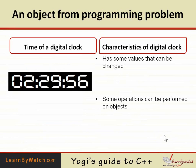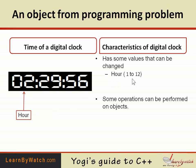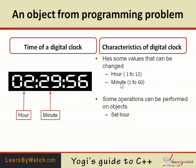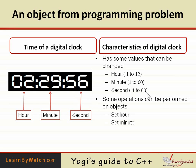The second example is taken from a programming problem — the object is the time of a digital clock. The values that can be changed are: hour (1 to 12), with the operation 'set hour'; minute (1 to 60), with the operation 'set minute'; and second (1 to 60), with the operation 'set second'. Sometimes we want to change all values at once using a single operation called 'set time', which changes the values of hour, minute, and second together.